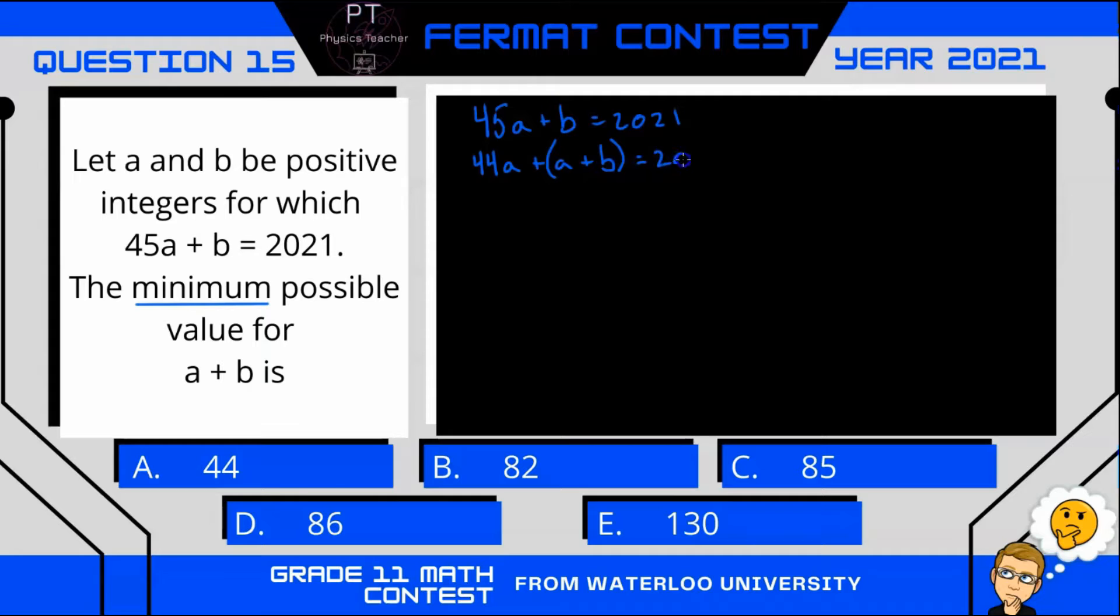Since I want to minimize a + b, in order to do that I'm going to try and maximize 44a, try to get 44a as close to 2021 as possible.